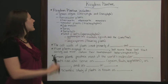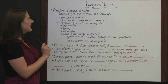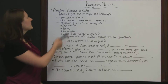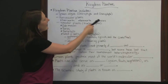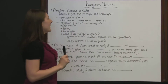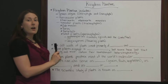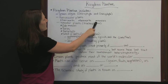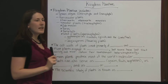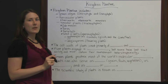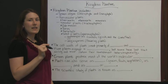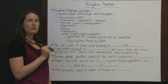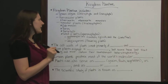Kingdom Plantae includes green algae — chlorophyta and carophyta — and non-vascular plants such as liverworts, hornworts, and mosses. Non-vascular means they don't have any kind of veins to carry nutrients throughout the plant.